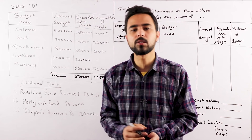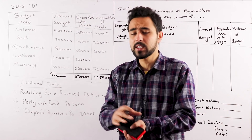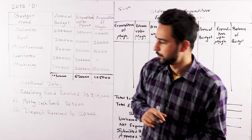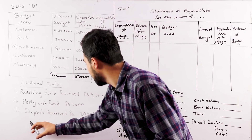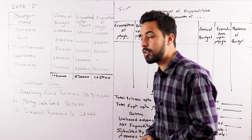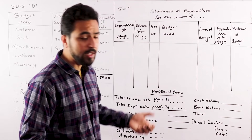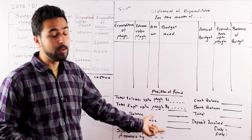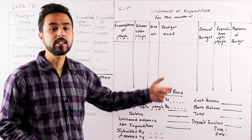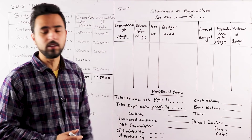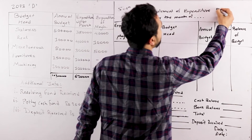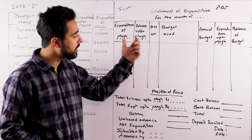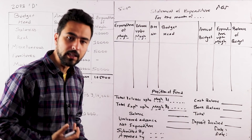It is worth earning this money, investing money. These funds don't have good money. This is the deposit receipt of 10,000 rupees. If you have a government of Nepal, you will have a government office and government accounting.